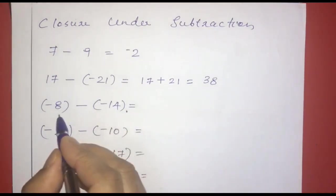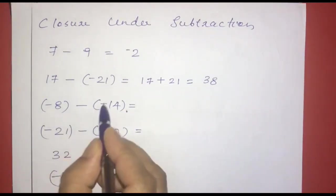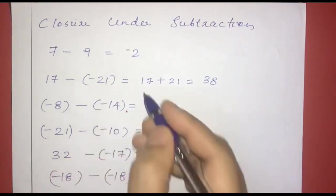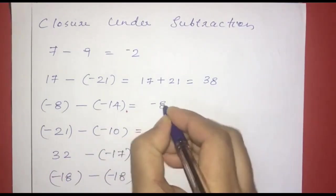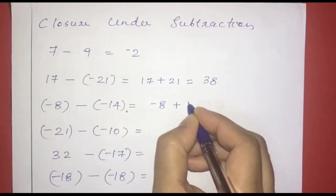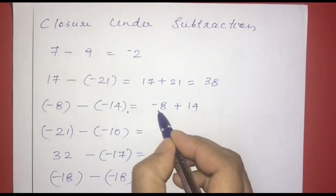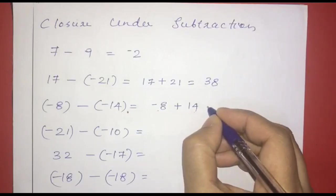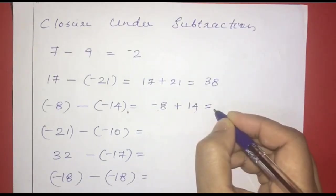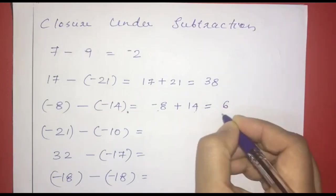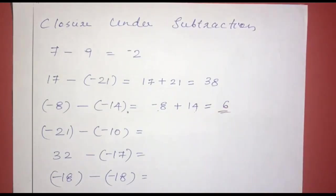Next one: negative 8 minus negative 40. Negative of a negative becomes positive, so negative 8 plus positive 40. The result is a positive integer.